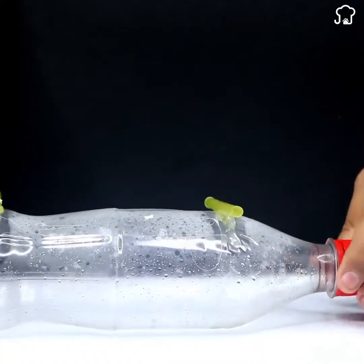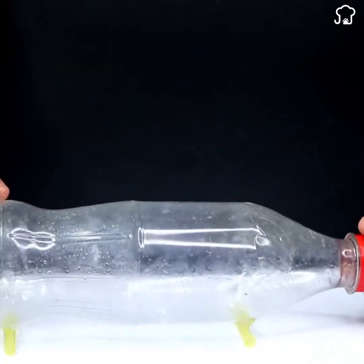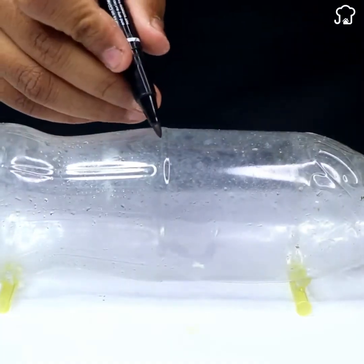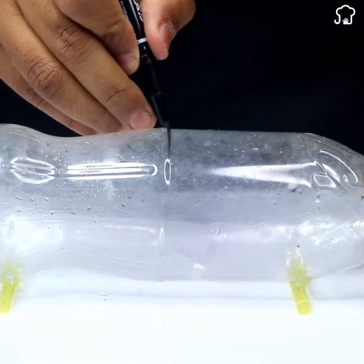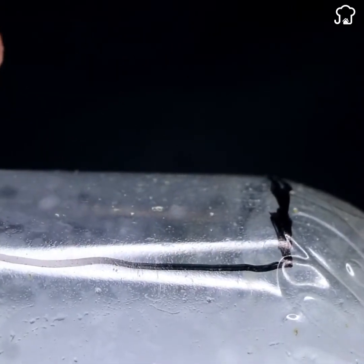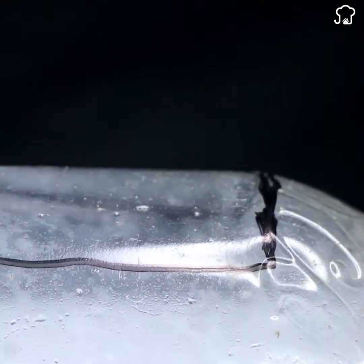Once they're glued together, we'll flip the bottle upside down. Once again with the marker, we'll draw a square right in the middle of the bottle. It should look like this.